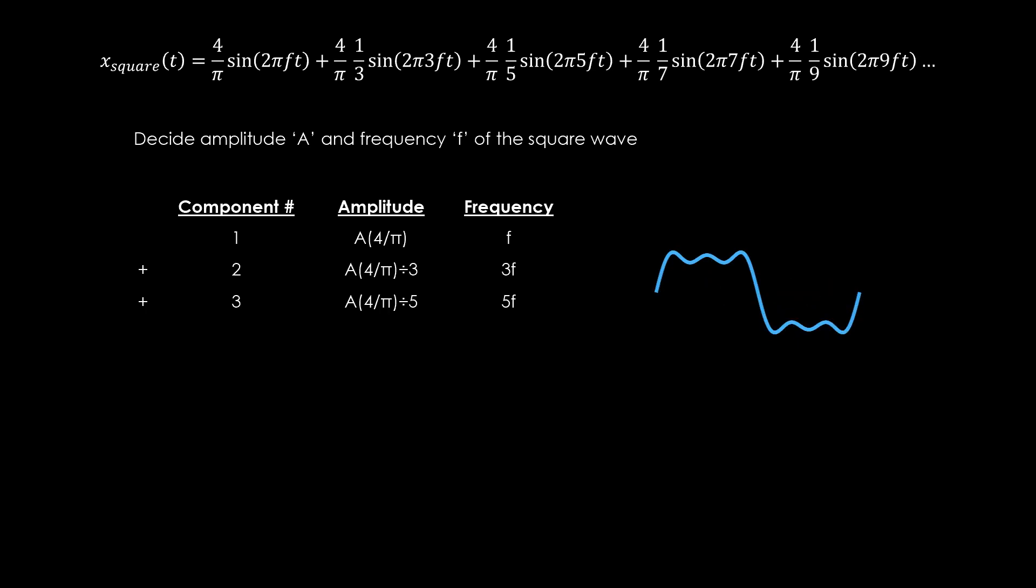The subsequent components follow this pattern by going through the odd numbers, that is, 7, 9, 11, 13, etc.